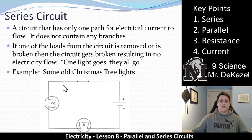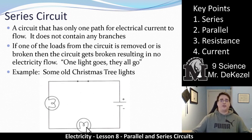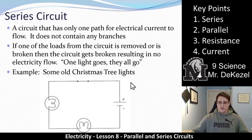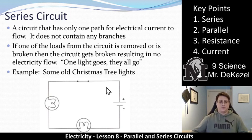So if one of the loads from the circuit is removed — like if you remove this light bulb, or if the light bulb burns out — then the circuit is broken, and there will be no electricity flowing through any of them. An example would be some old Christmas lights: if one light goes, they all go. To find that one burnt-out Christmas light and replace it can be difficult. Those lights don't exist as much anymore, but series circuit Christmas lights were a big pain.